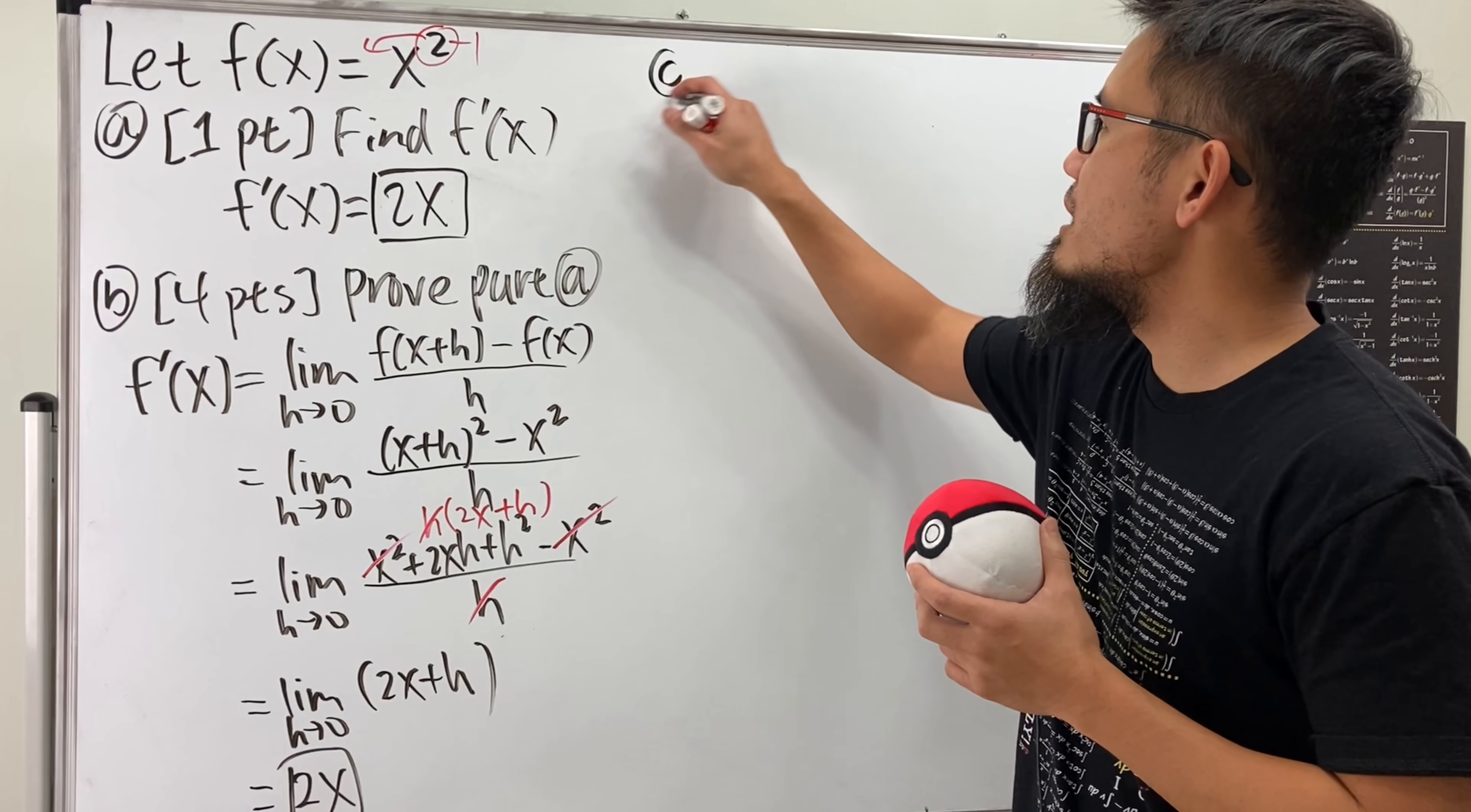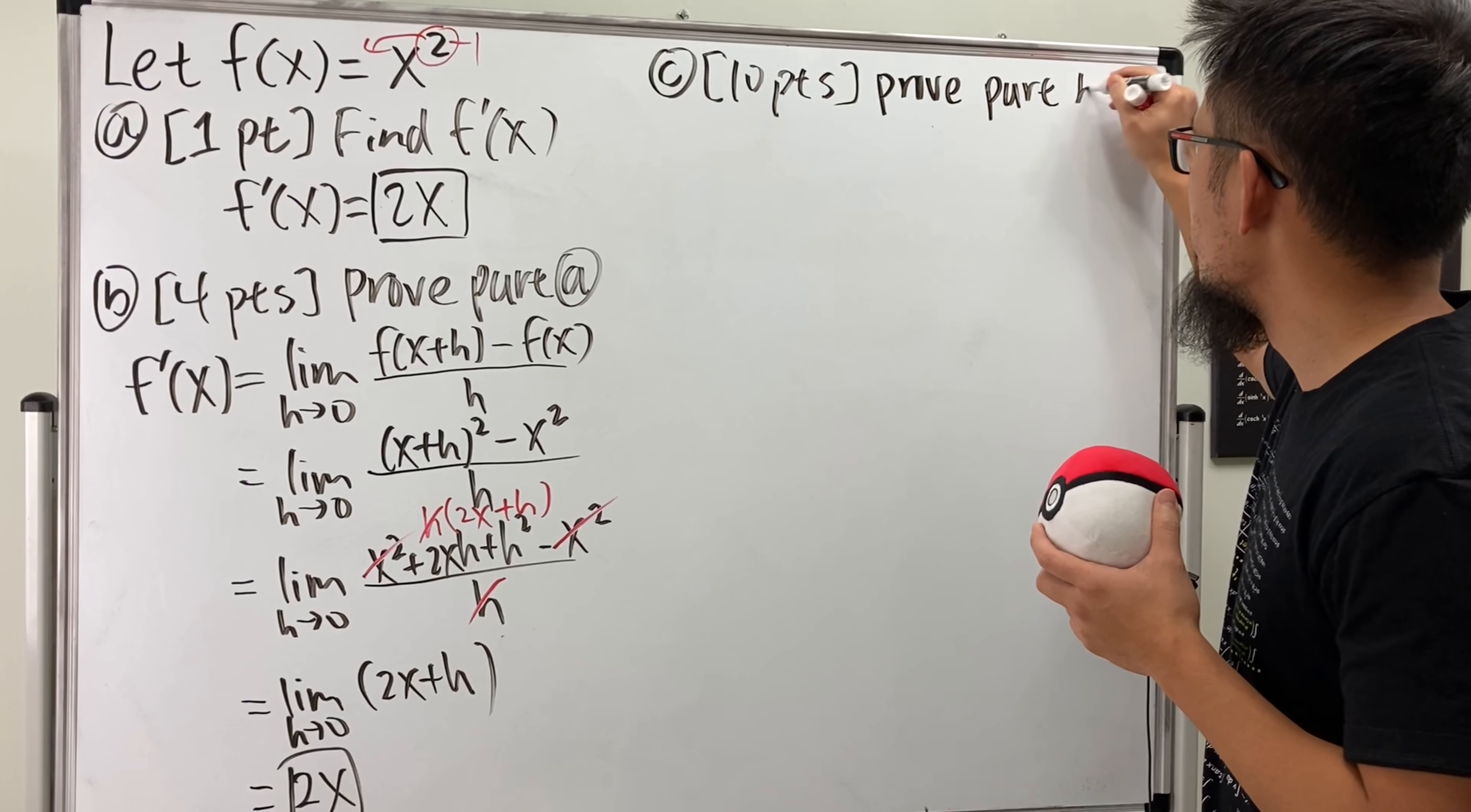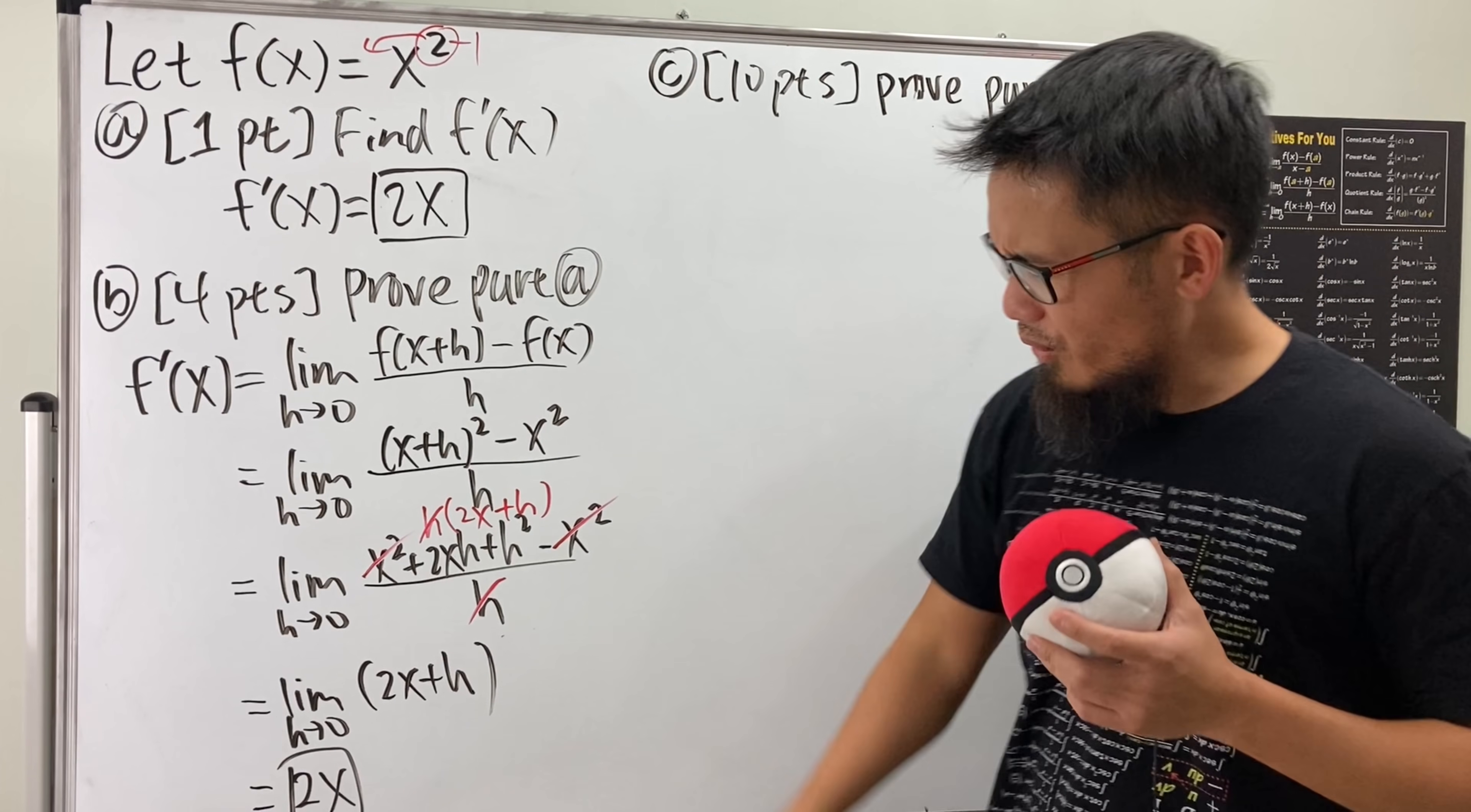Yeah, but here is part C. 10 points. And you know what we are going to do? We are going to prove the result from part B. So I'm just going to write down, let's go ahead and prove part B. And now you might be thinking, man, are you serious? Isn't that the proof already? And now we have to prove the proof?